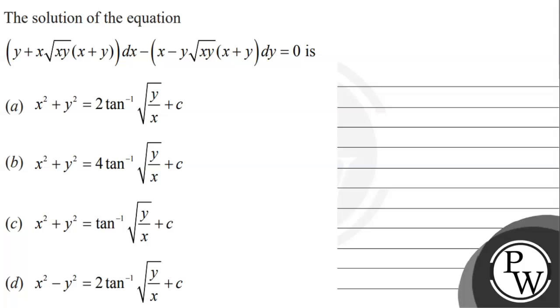Hello! Let's read the question. The question says that the solution of the equation (y + x√(xy)(x+y))dx − (x − y√(xy)(x+y))dy = 0 is: